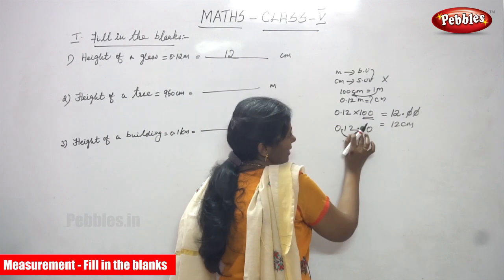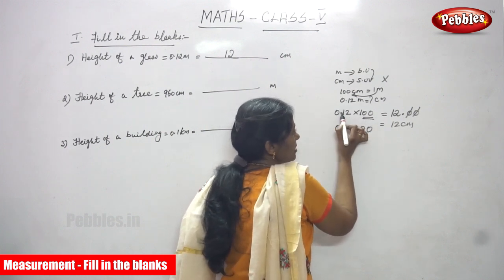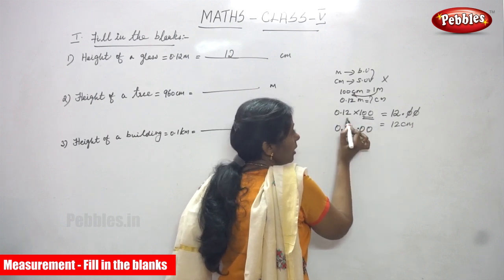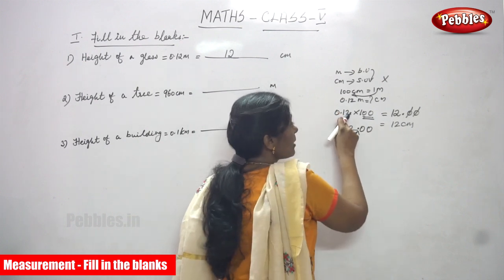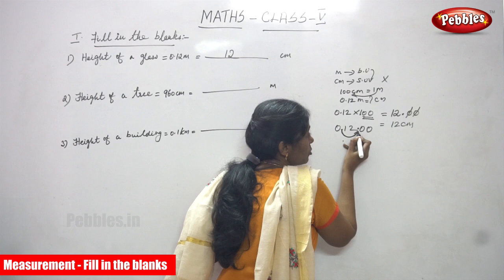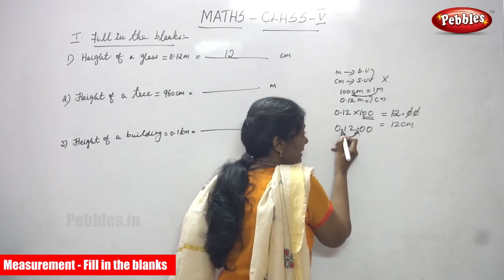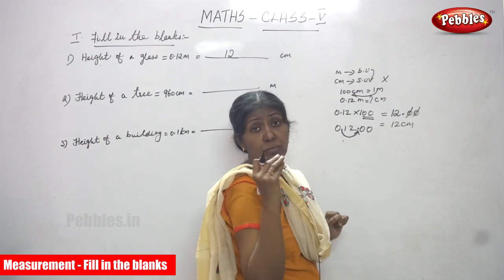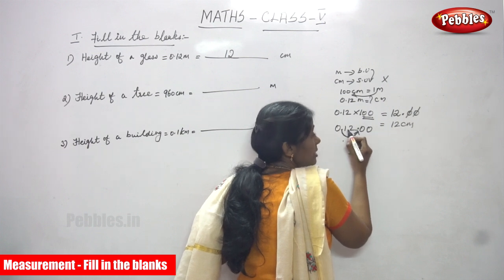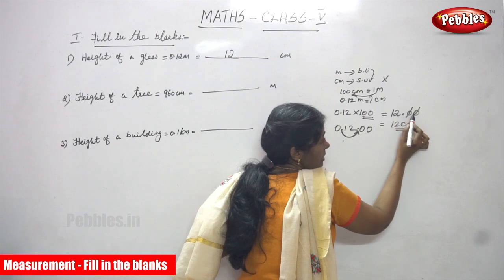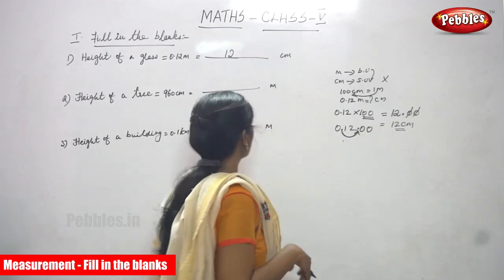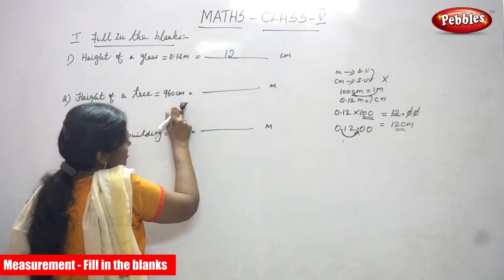0.12 multiplied by 100 — the decimal point moves two places to the right. After moving two places, the point comes after 12. After the decimal point, there are only zeros, which have no value, so you cancel the zero. The answer is 12 centimeters. Next question: the height of a tree is 960 centimeters — convert into meters.